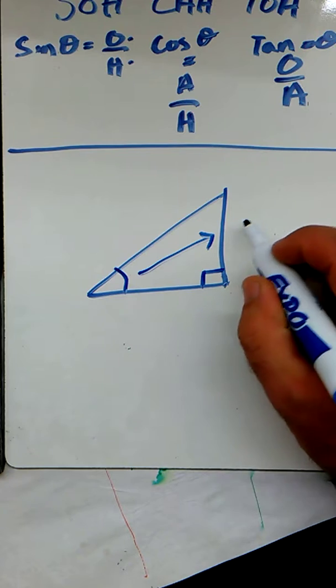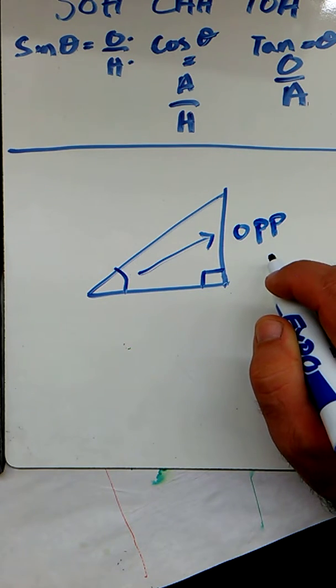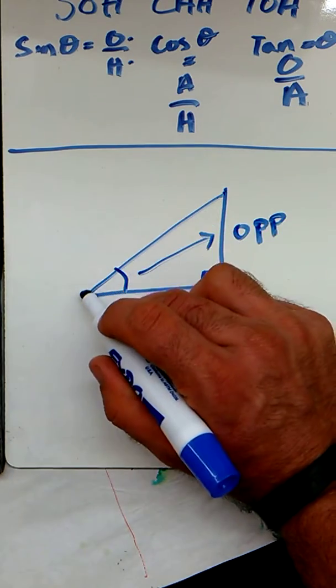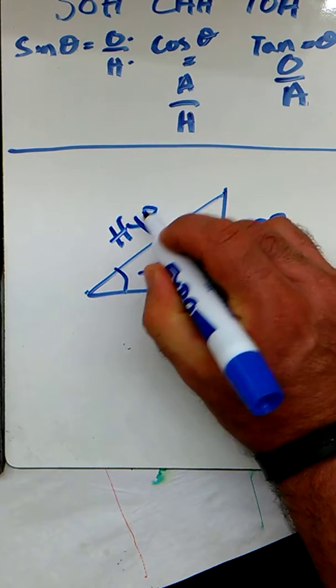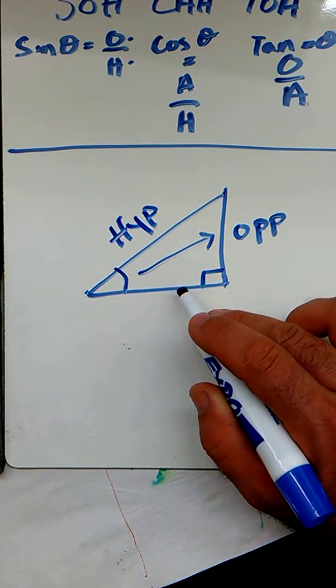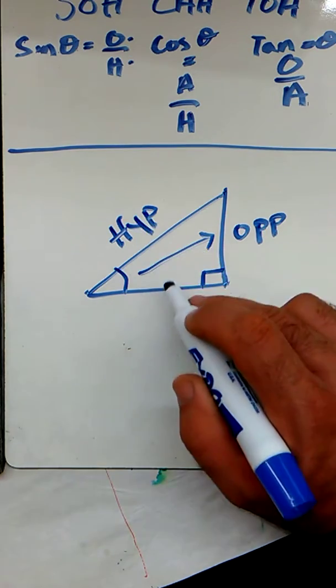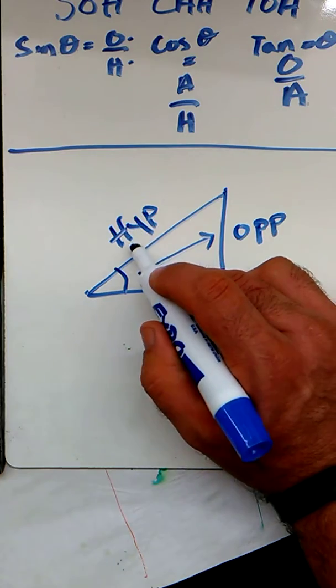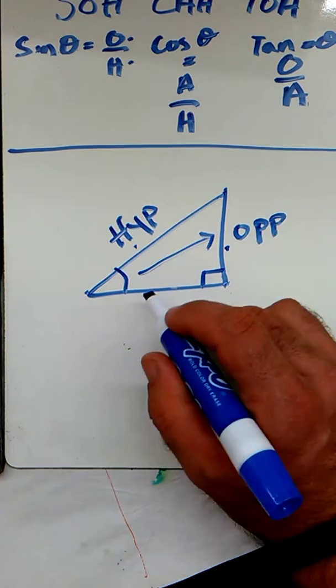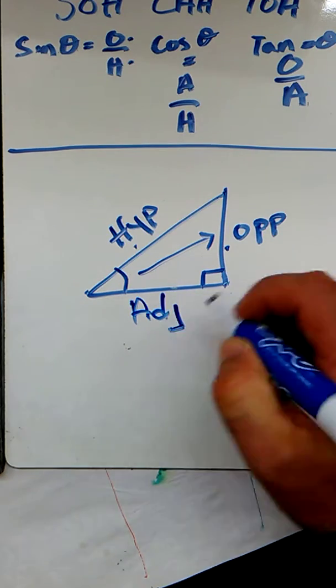Now, opposite that angle is the opposite side. We know that the longest side of the triangle is the hypotenuse. And then the other side is the adjacent because you might get the hypotenuse and the adjacent confused. But realize that you've already labeled the hypotenuse and you've already labeled the opposite side. The other side is the adjacent side of the triangle.